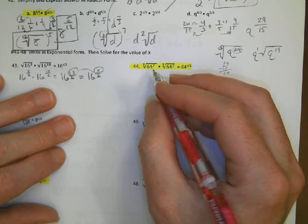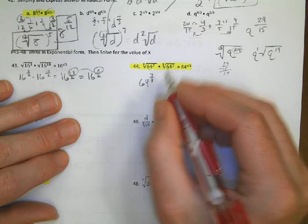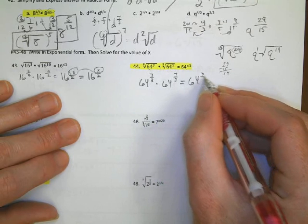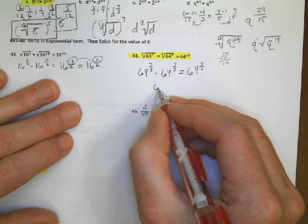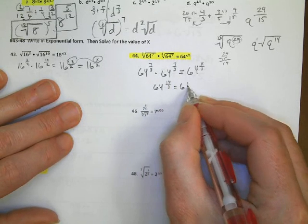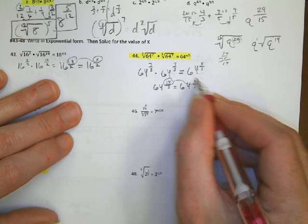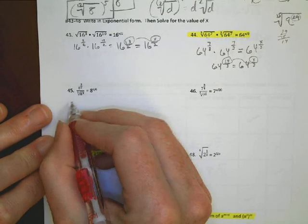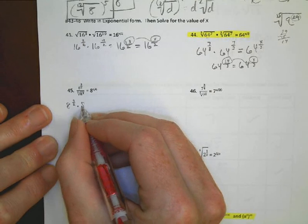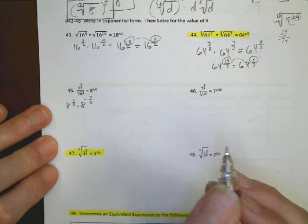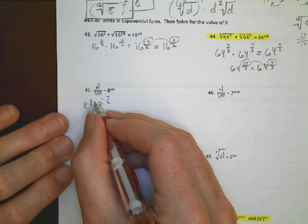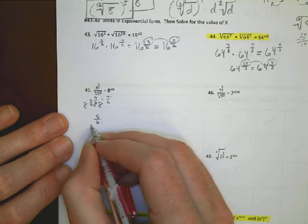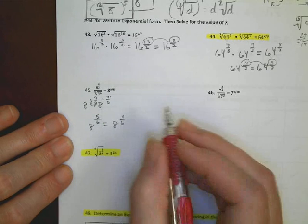Number 44. I have 64 to the 7/3rds there, times 64 to the 7/3rds there. We want to set that equal to 64 to the x over 3. Common denominator already, so I can add that. 64, 14 over 3 equals 64 to the x over 3. So my missing number here is 14. Number 45. I have 8 to the 3/2 times 8 to the negative 4/6. Because it's on the denominator. I need a common denominator, so I'll turn this to a 6. 2 times 3 is 6. 3 times 3 is 9. 9 minus 4 is 5/6. I have an 8 there. Set that equal to 8 to the x over 6. And my missing number is 5.